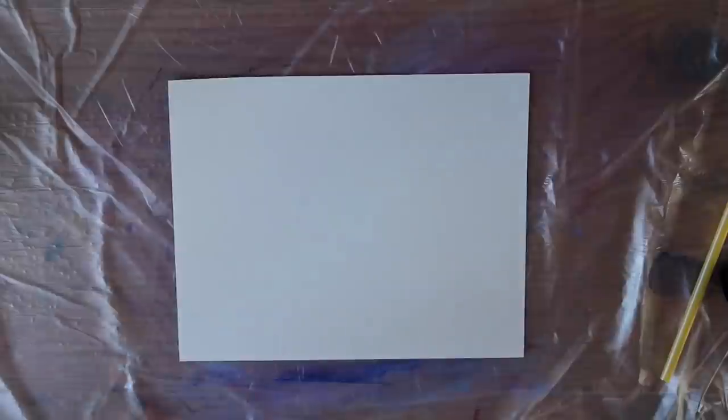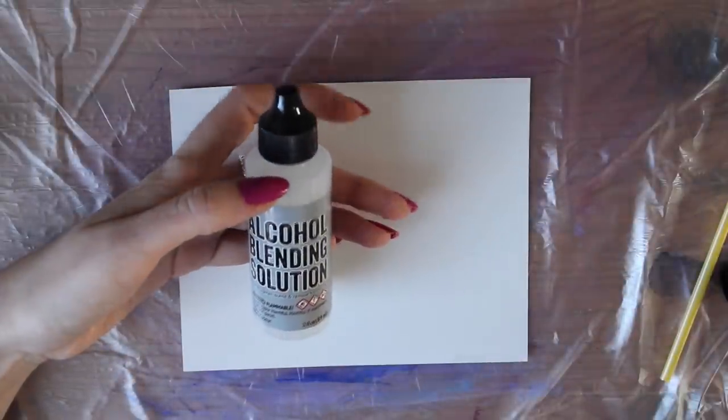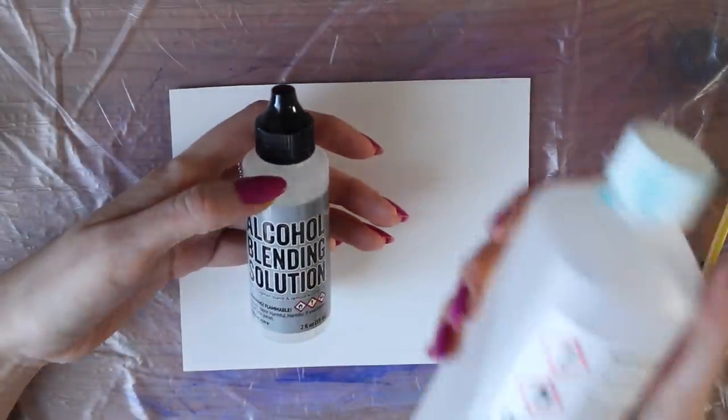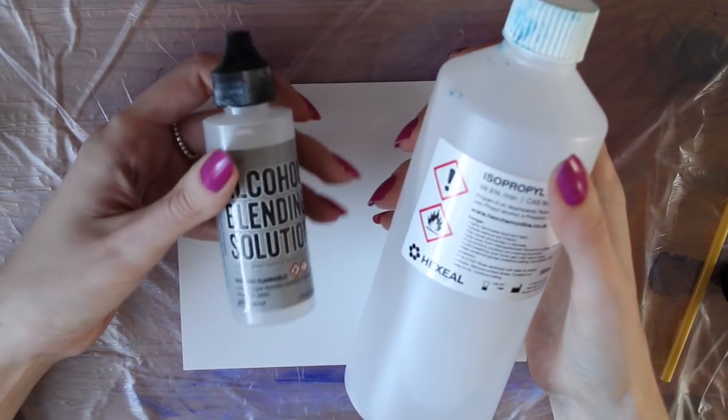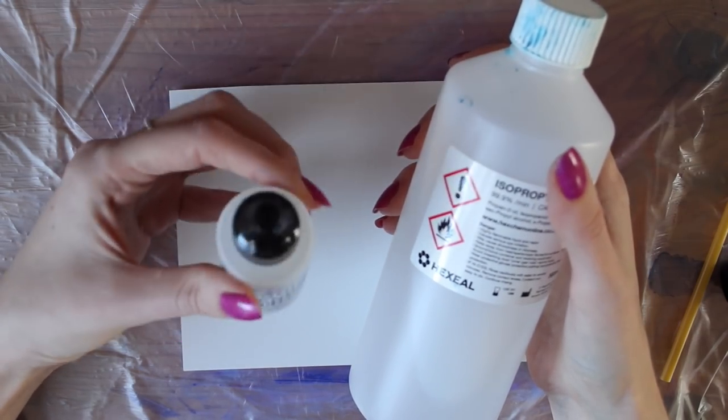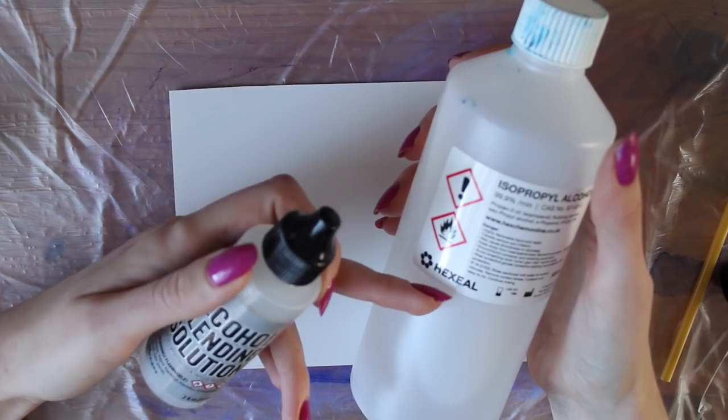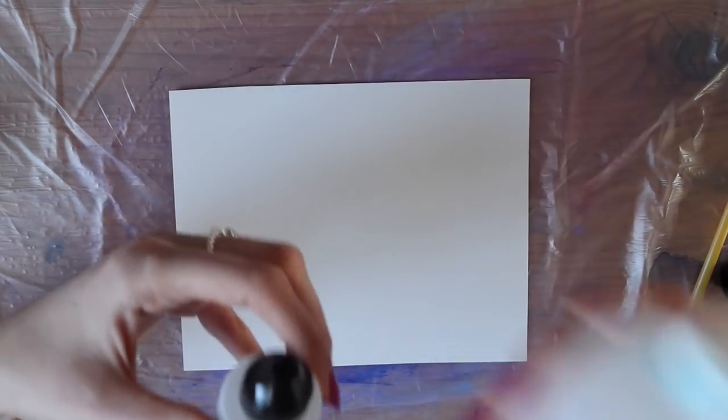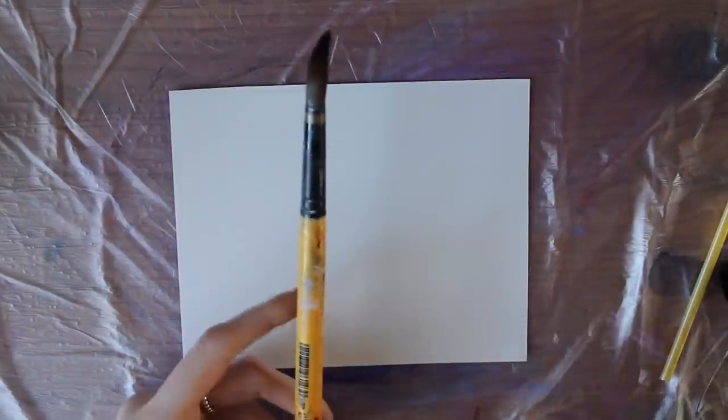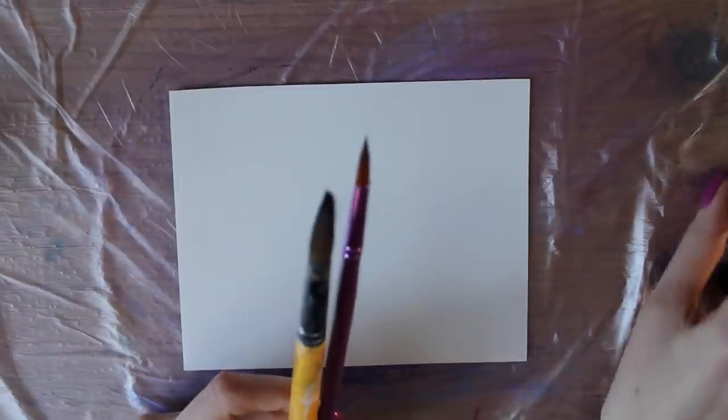And silver as well. So you're also going to need some alcohol blending solution or some isopropyl alcohol. They're basically the same thing. I top this up with this once it's finished because it's a bit of a smaller bottle to use it from. Then you're going to want to have a paintbrush and maybe a smaller one as well, and a straw.